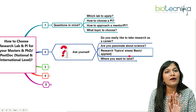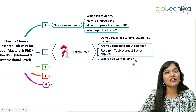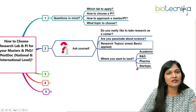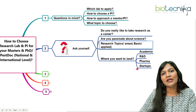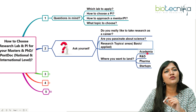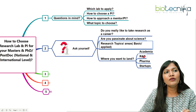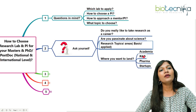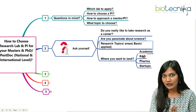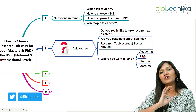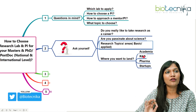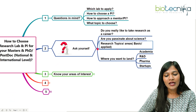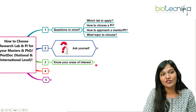For now, just make a basic outline of whether you want basic or applied research, and the next important thing is: where do you want to land? After your research — whether in a master's, PhD, or postdoc — do you want to enter academia, go into an R&D department, go into pharma companies, or join startups? Clear off all these questions and get your answers sorted before moving on.